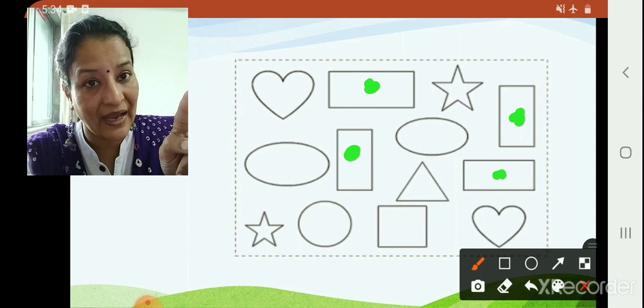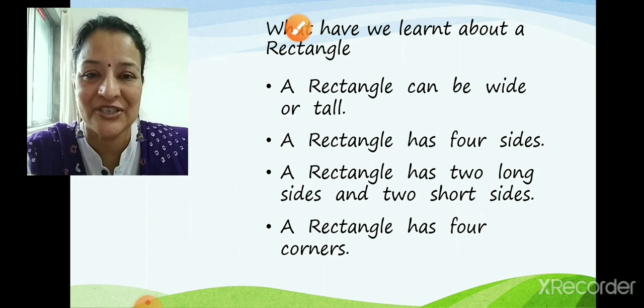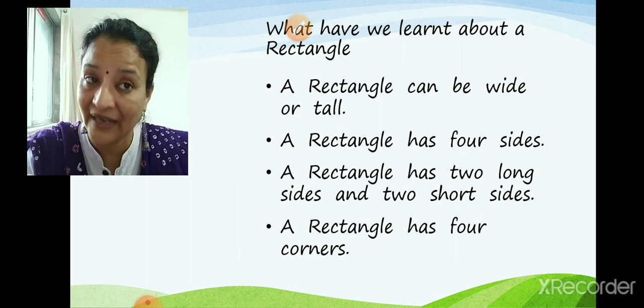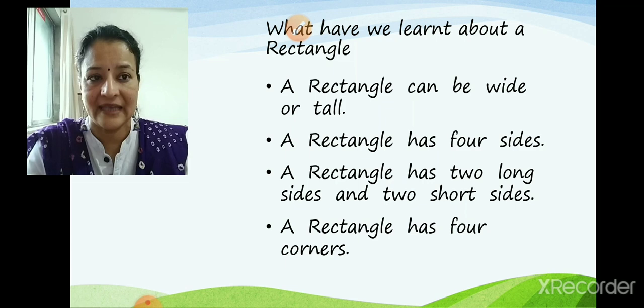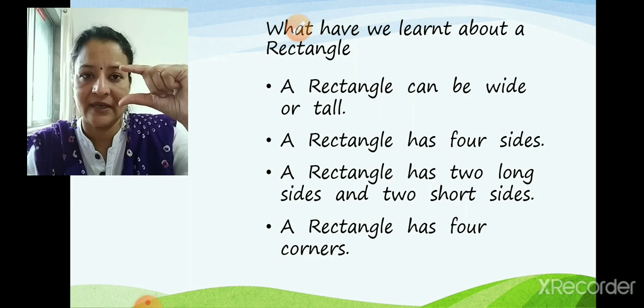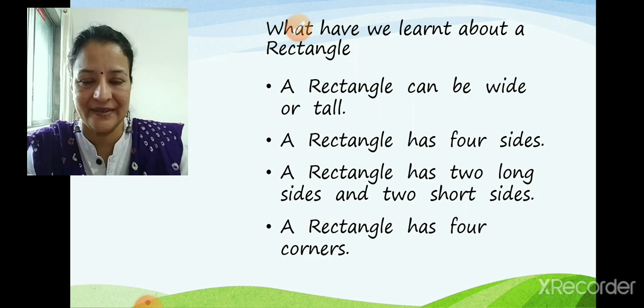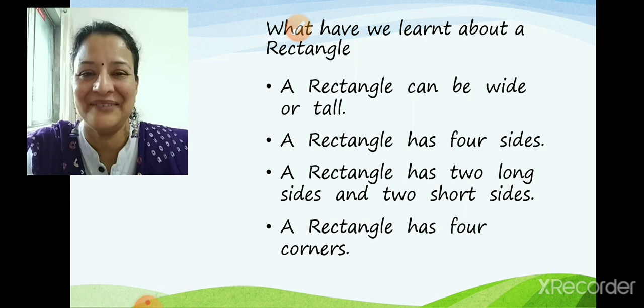You can see rectangle can be tall, rectangle can be wide. So now, what have we learnt about a rectangle? A rectangle can be wide or tall. A rectangle has four sides. A rectangle has two long sides and two short sides. A rectangle has four corners. This is all about a rectangle.